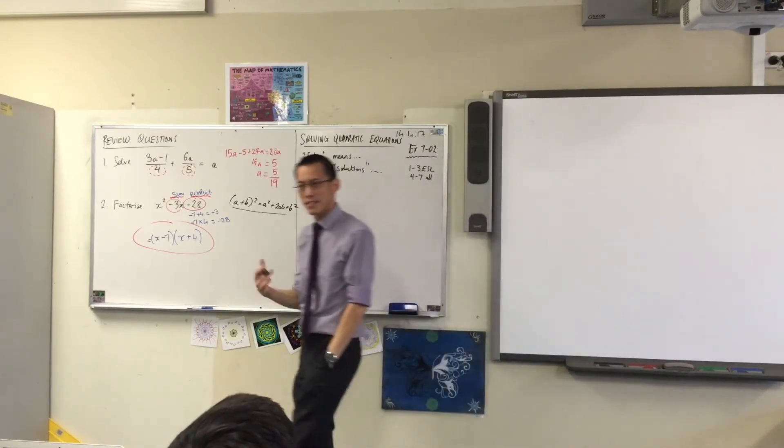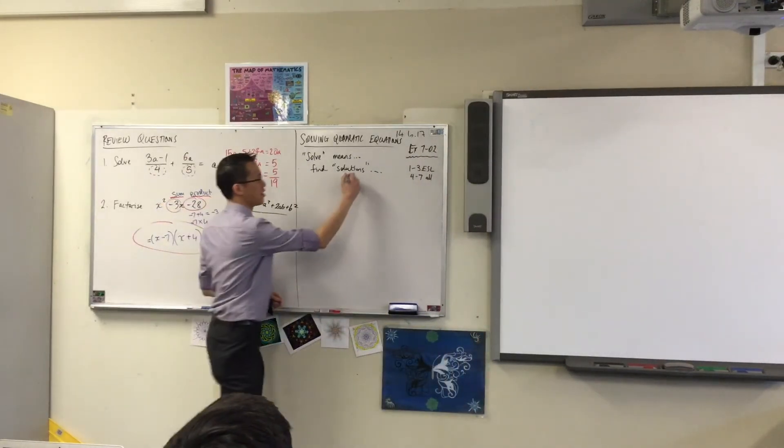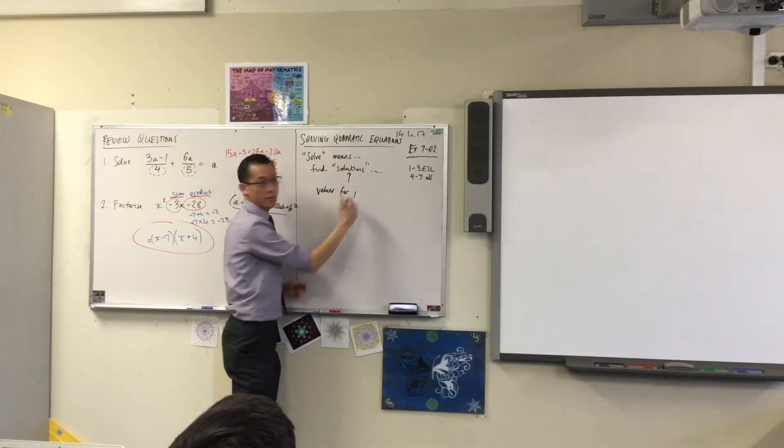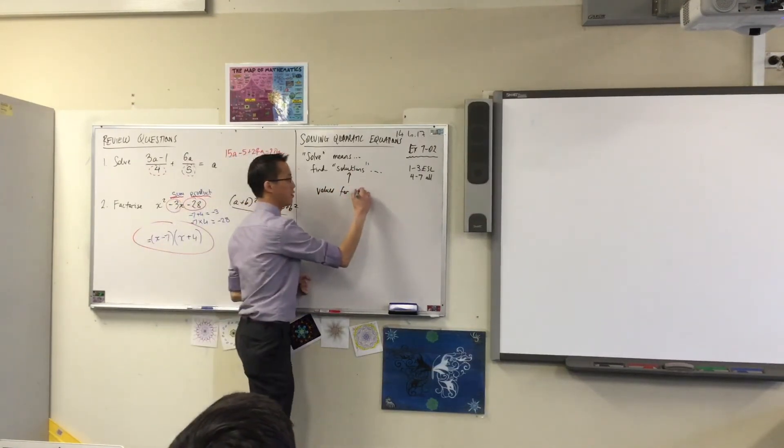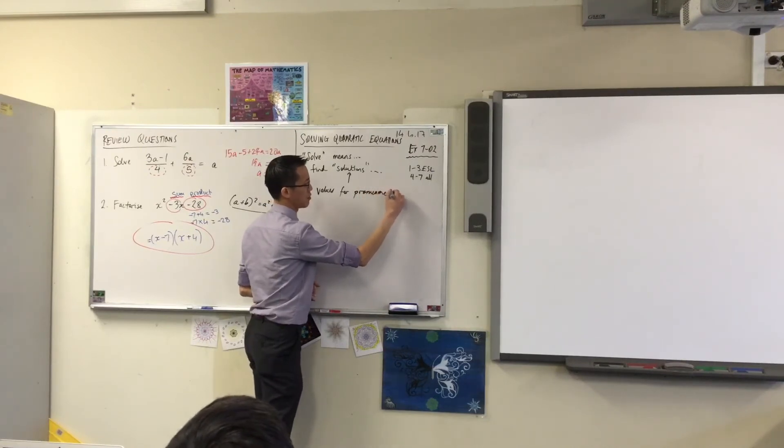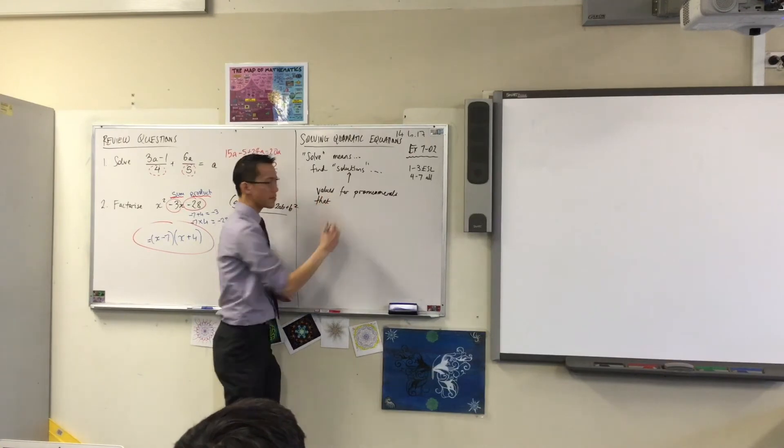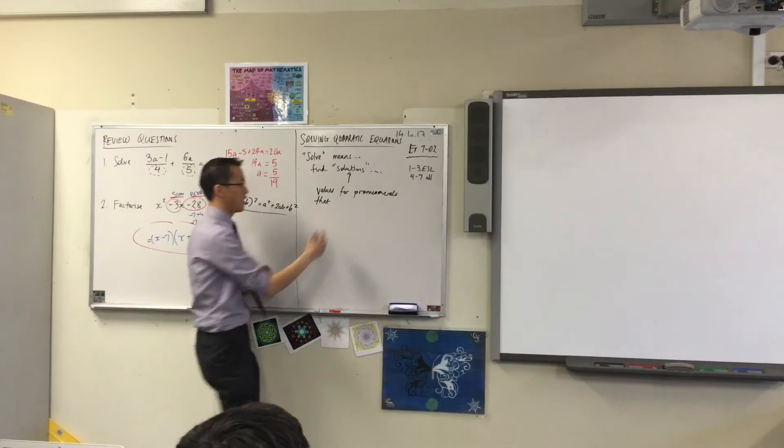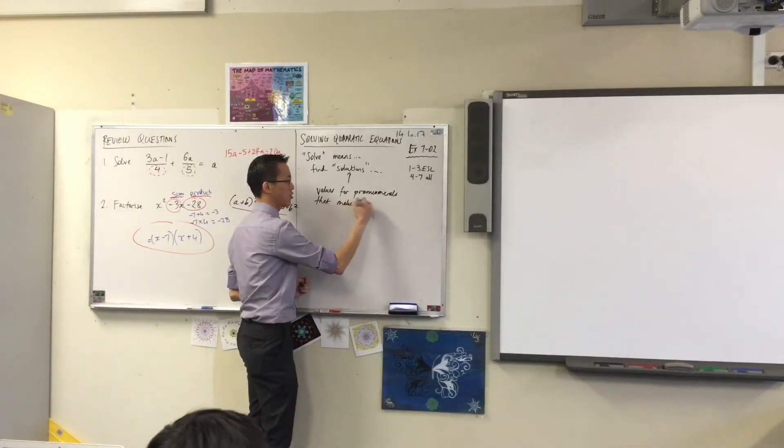But find solutions. What are solutions? Solutions are values for pronumerals, like A. Values for pronumerals. Now what do we want? We want this equation to be true. So they make the equation true.